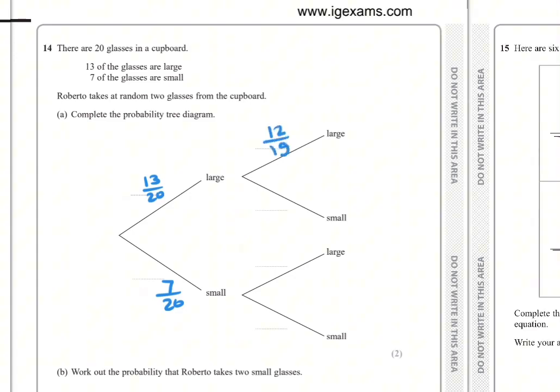If the first is small, the probability that the second is small is 6 over 19, and the probability that the second is large is 13 over 19.